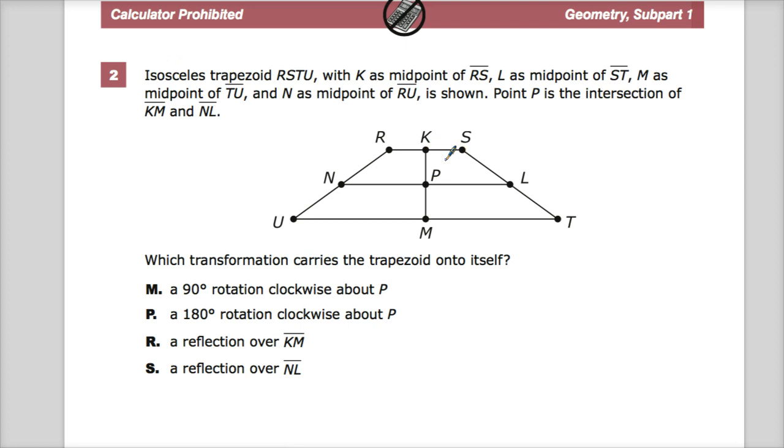They're telling you that you can feel safe in knowing that RK and KS are the same. This and this are the same, so on and so forth. Point P is the intersection of KM and NL, which means this could essentially act as an axis, long story short.